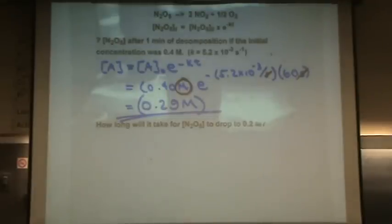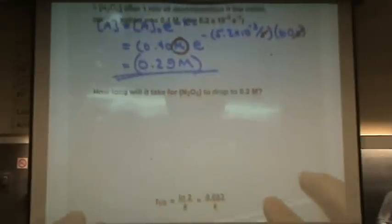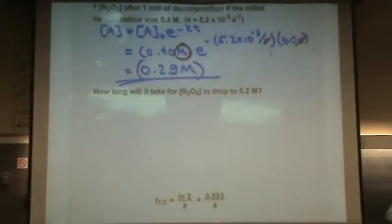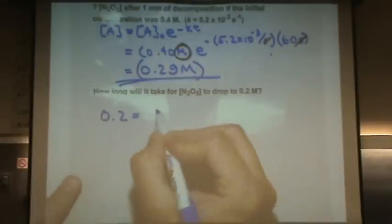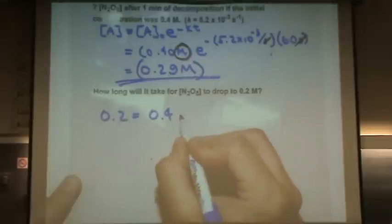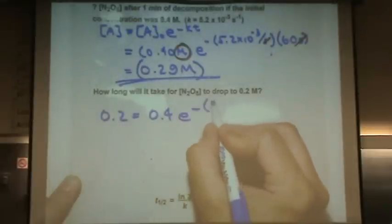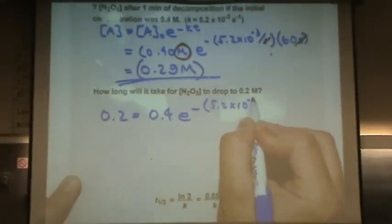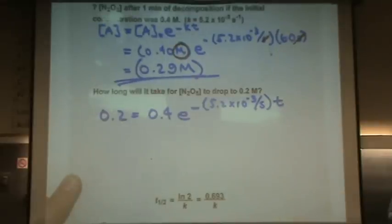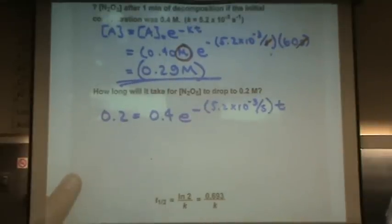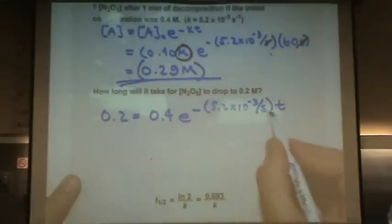How long will it take for N2O5 to drop to 0.2 molar? So here's 0.29, how do I get it to 0.2 molar? Well, you can use the same equation. Just say 0.2 equals 0.4 e to the minus 5.2 times 10 to the minus 3 over seconds, and we have to solve for time. So now we're solving for time. I'm going to get my answer in seconds because the rate constant is in seconds.